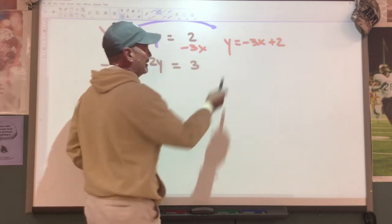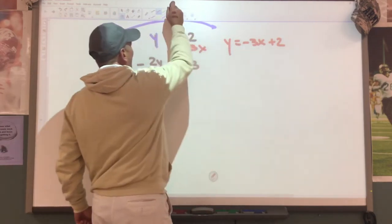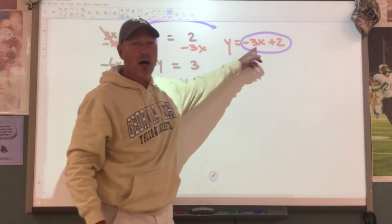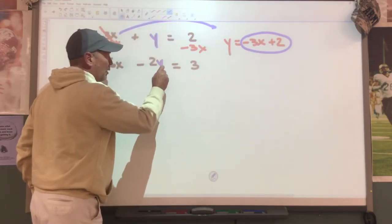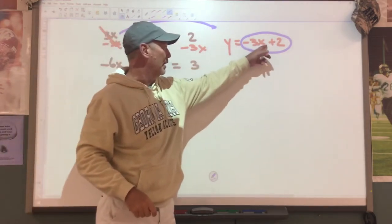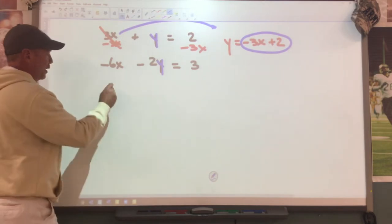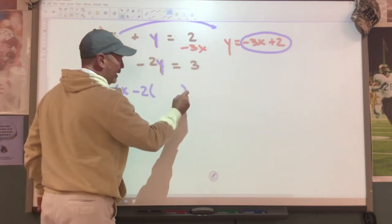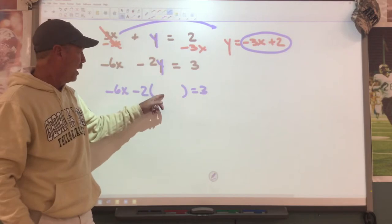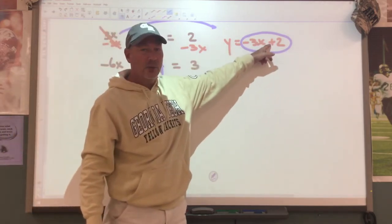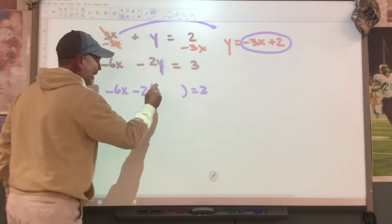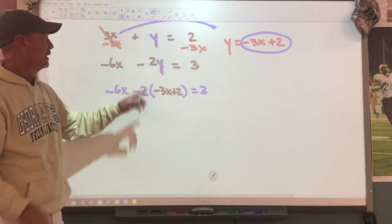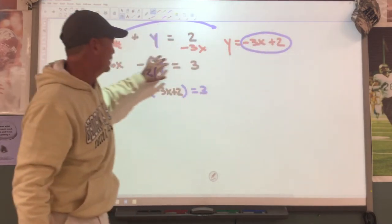Since these are the exact same thing because they're equal, I'm going to ask you to take this - which is the same thing as y - and substitute it right here where that letter y is. These are the same things, so we're going to go negative 6x minus 2 times whatever y is equals 3. So instead of the letter y, we're going to write negative 3x plus 2. Get the letter by itself and then substitute it into the second equation.